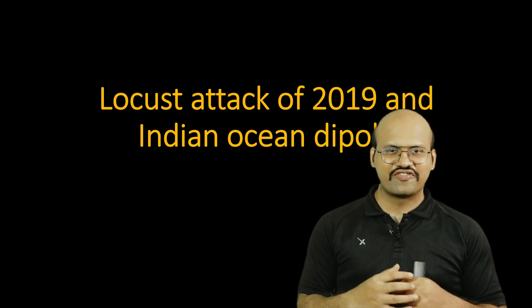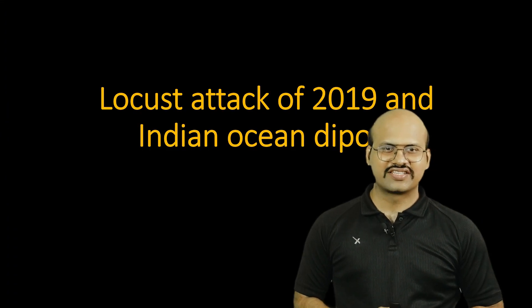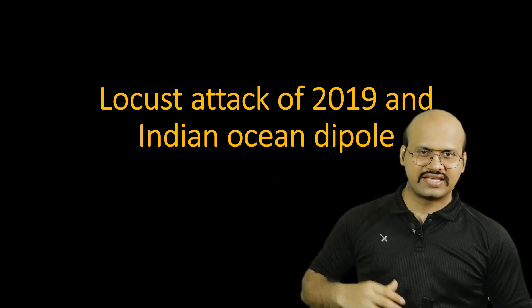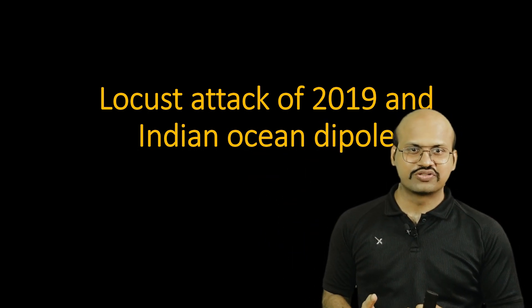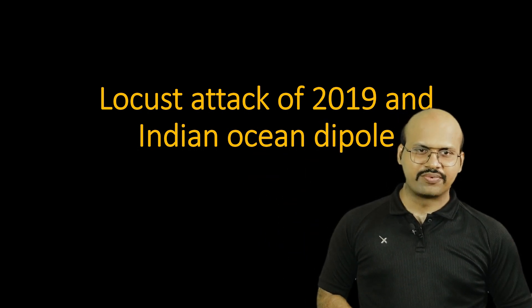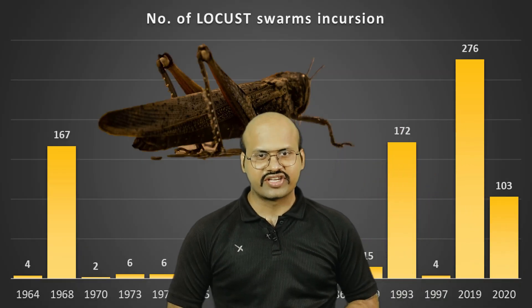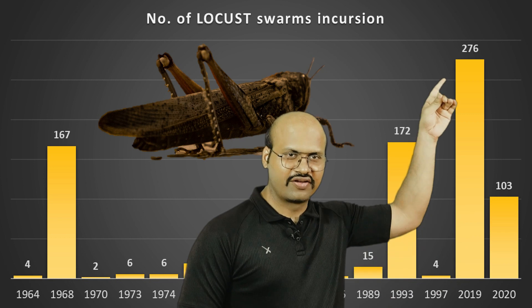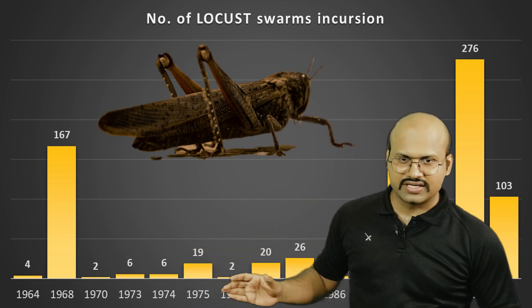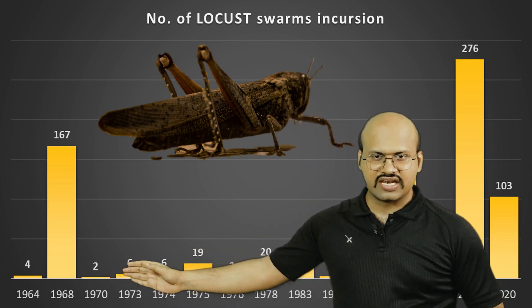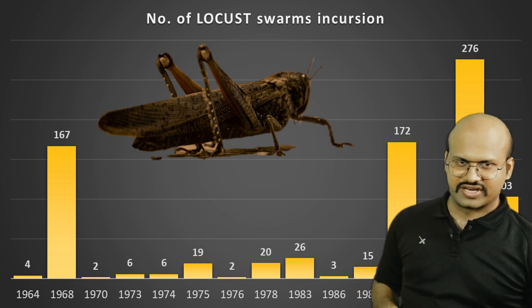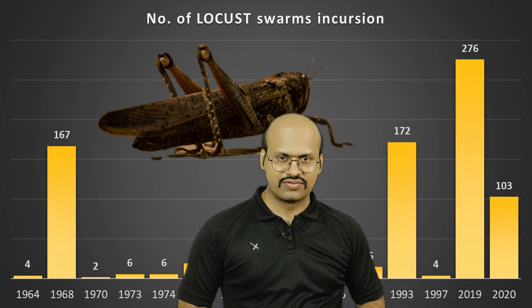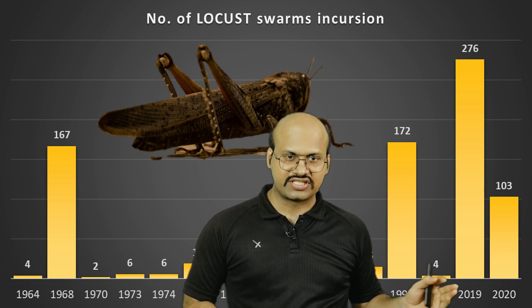Welcome to another video of Zeta Access. Today we will discuss the locust attack of 2019 and its linkages with the Indian Ocean Dipole. In 2019, there was a drastic increase in locust attacks in India. In normal years, locust swarm attacks remain at a certain level, but in 2019 they increased to a much higher value. So what were the causes for such a drastic increase?